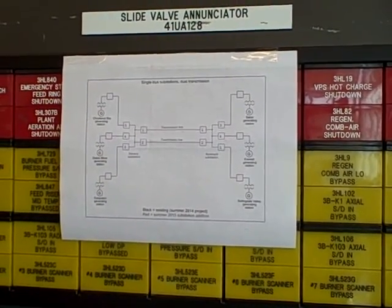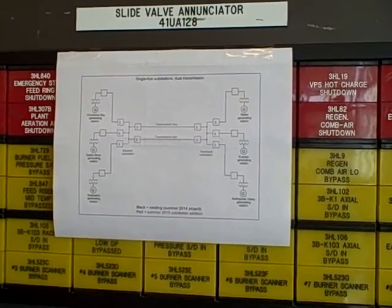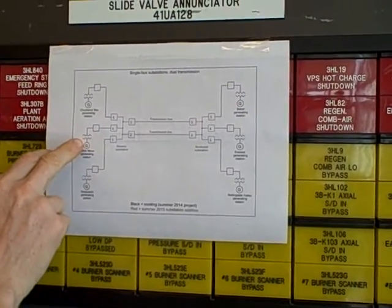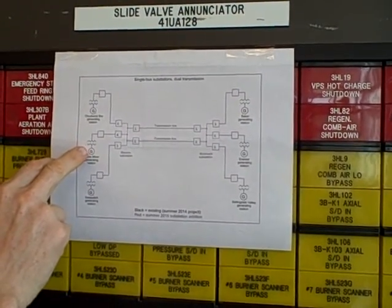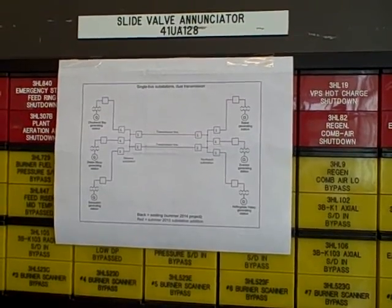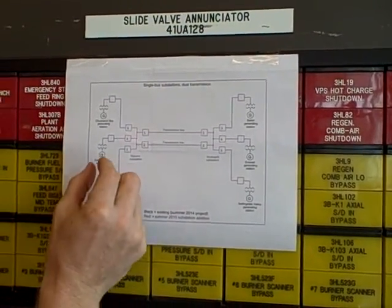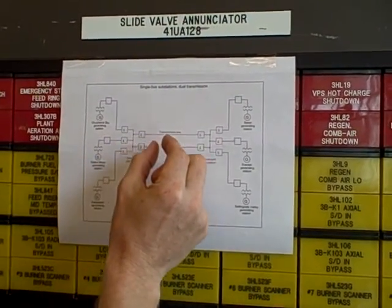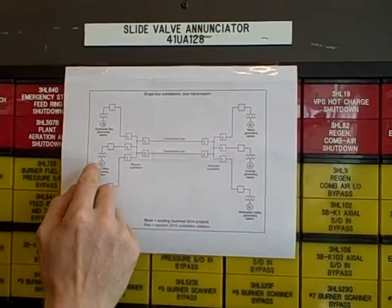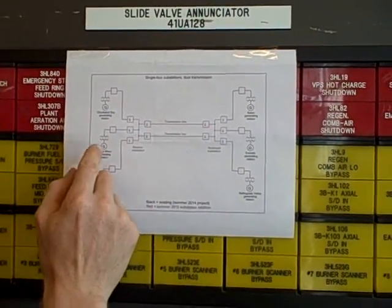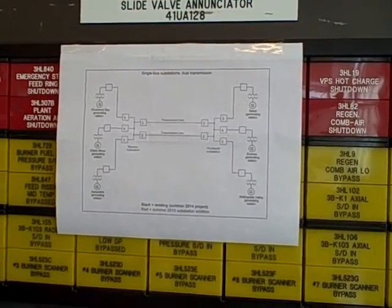We will be able to hear the generator labor under that load. Very soon thereafter, the overcurrent relay on the generator will trip — a time overcurrent trip. In this case, we have so much impedance along the way that even a direct bolted fault does not result in an instantaneous overcurrent trip, but just time overcurrent.